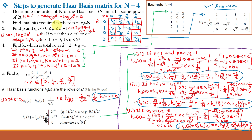Step 2 is to find the total number of bits required, small n, where small n equals log of capital N base 2. So small n equals log of 4 base 2. Since 4 is 2 raised to 2, we get 2 times log 2 base 2, and log 2 base 2 is 1, giving small n equal to 2. So the total number of bits required are 2, represented as 00, 01, 10, and 11.